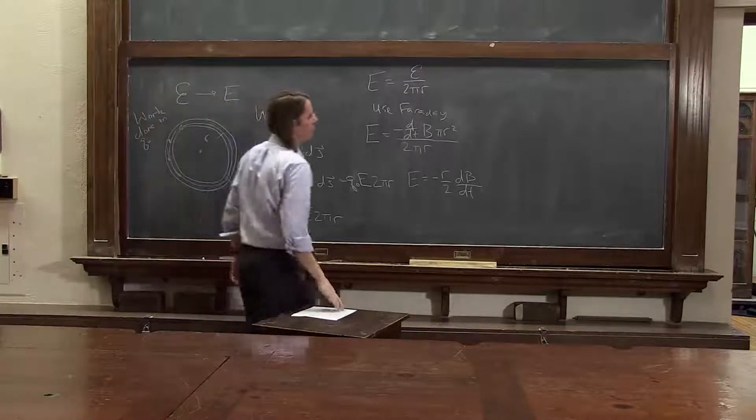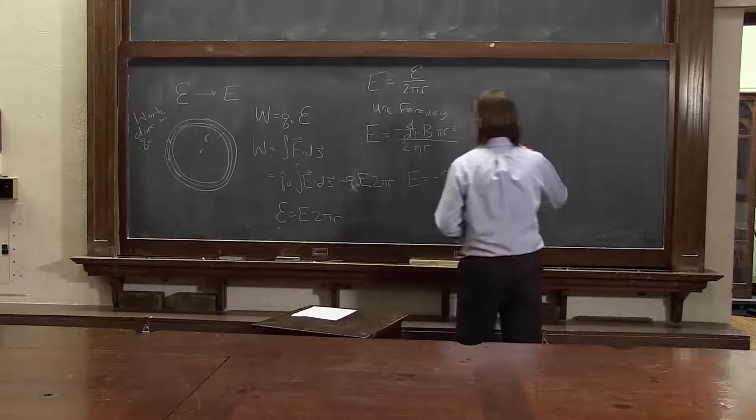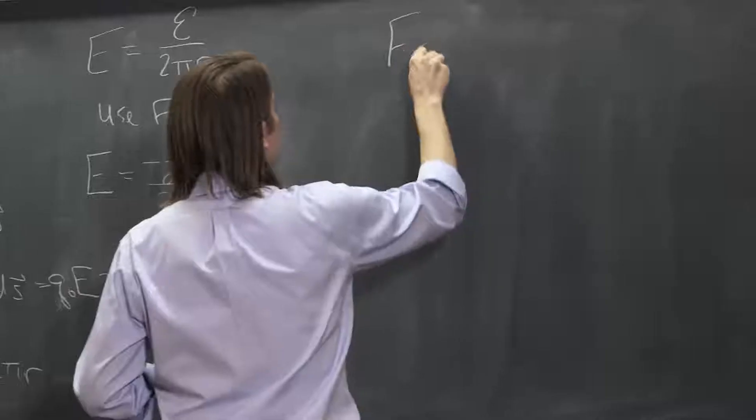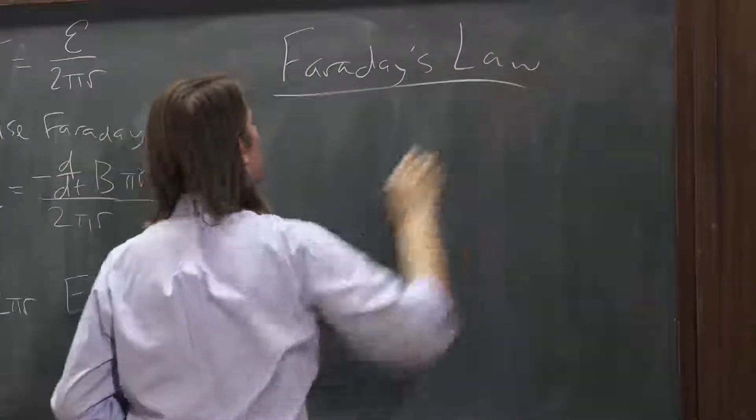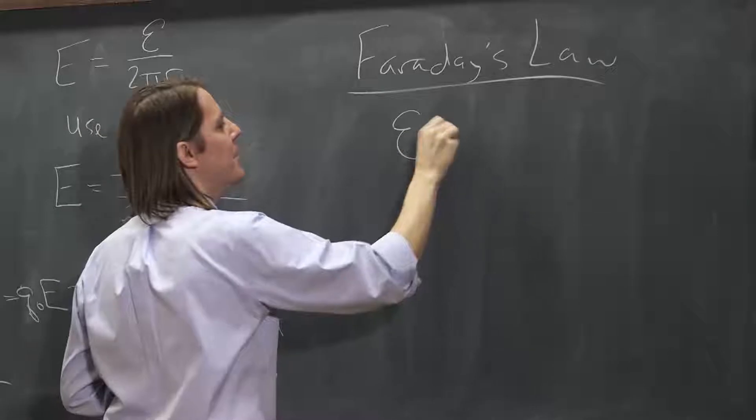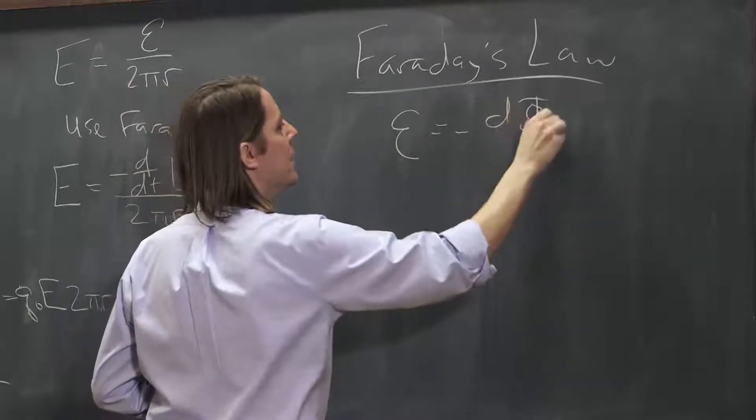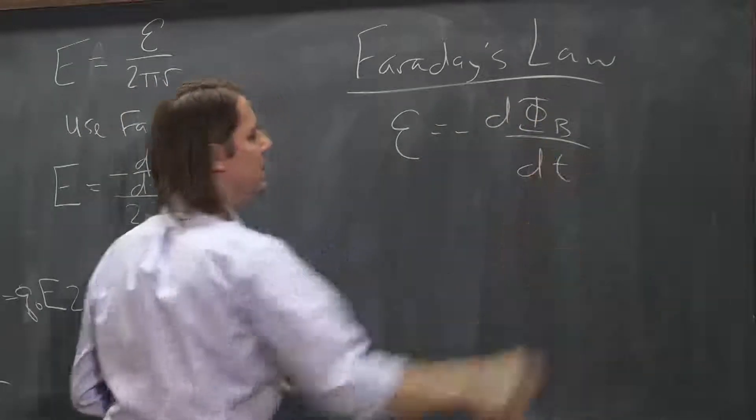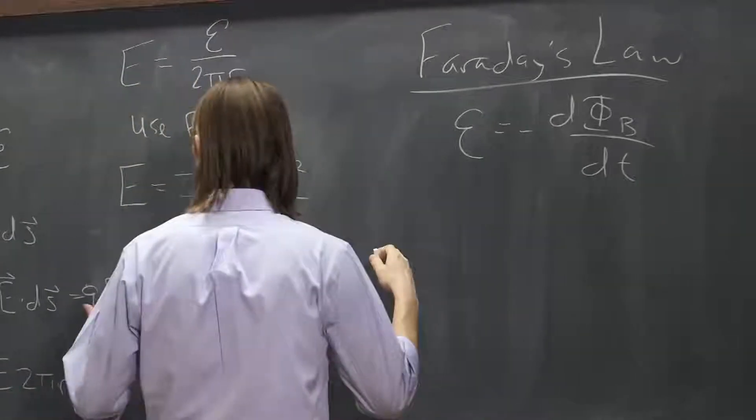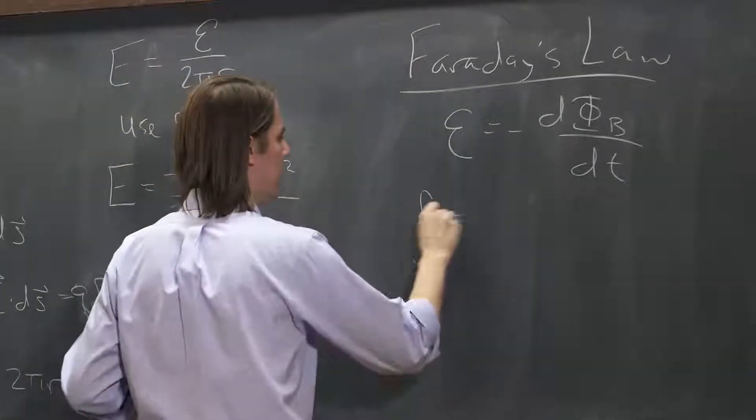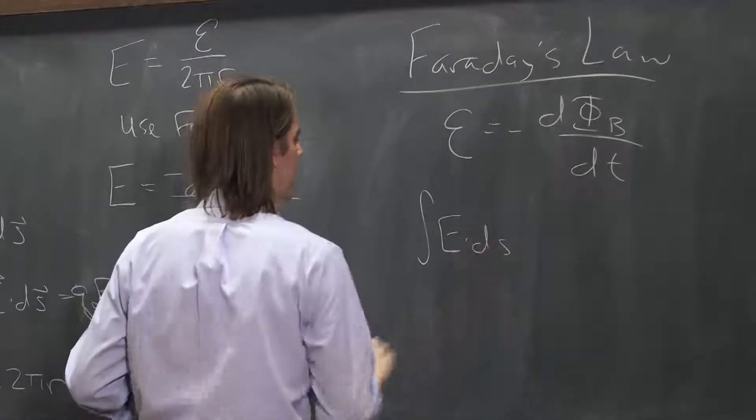That's that specific case. We can also rewrite Faraday's law in a more general way. So we usually would write the EMF as minus dΦ_B/dt. But now, if we want to write it in terms of fields, we would say the EMF is the integral of E dot dS.